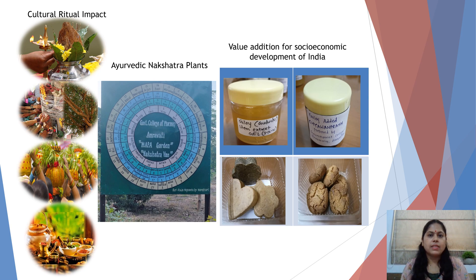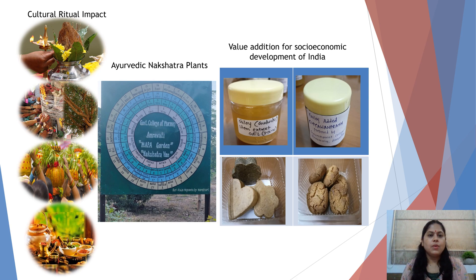Traditionally, these plants are considered sacred and our ancestors linked them to various gods and goddesses so that we should conserve them. In Ayurveda, there is an interesting concept of nakshatra, where after the birth of a child, one plant according to his or her nakshatra needs to be planted and conserved. This is a very interesting concept introduced by our ancestors to conserve plants.